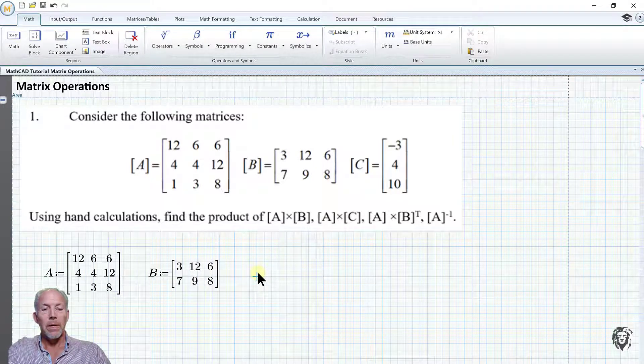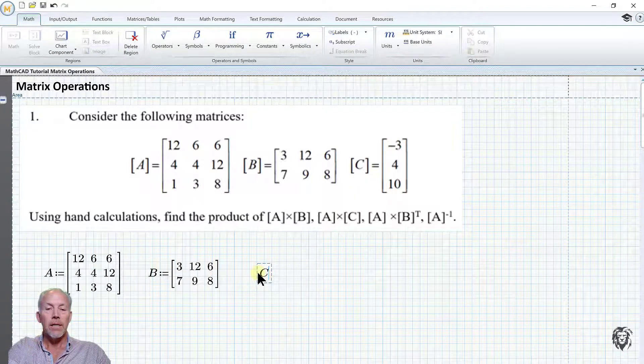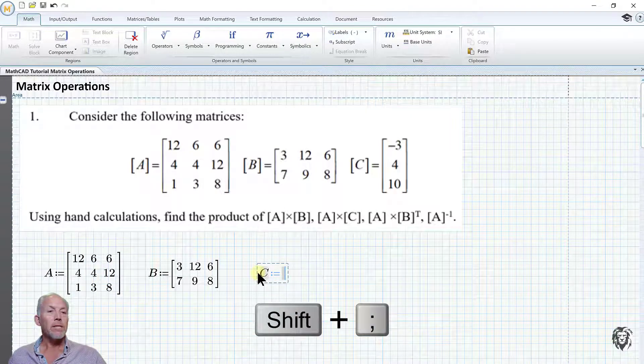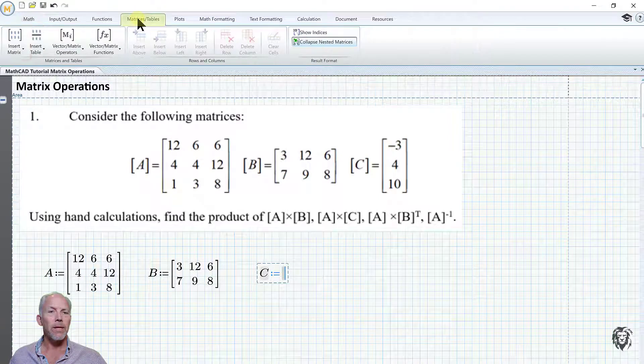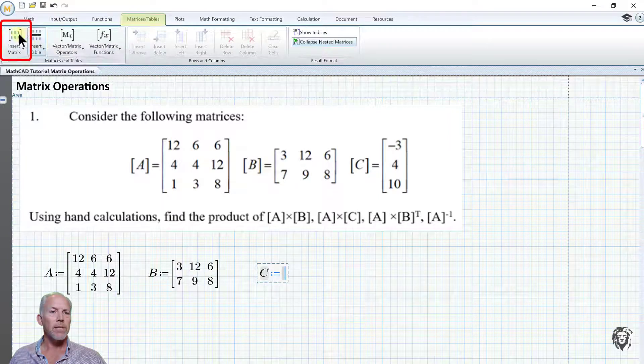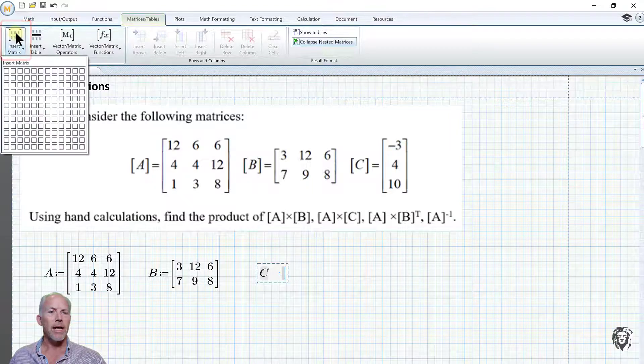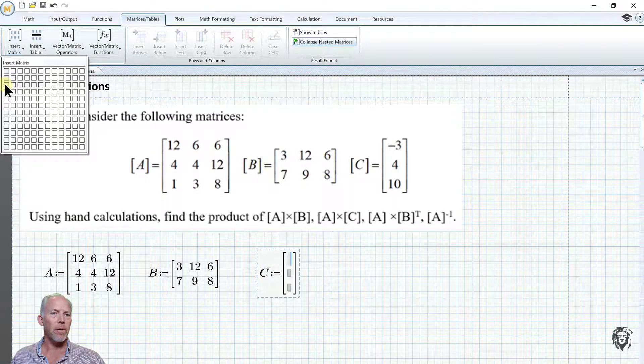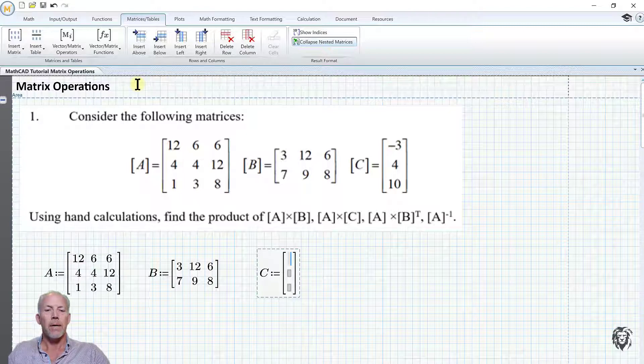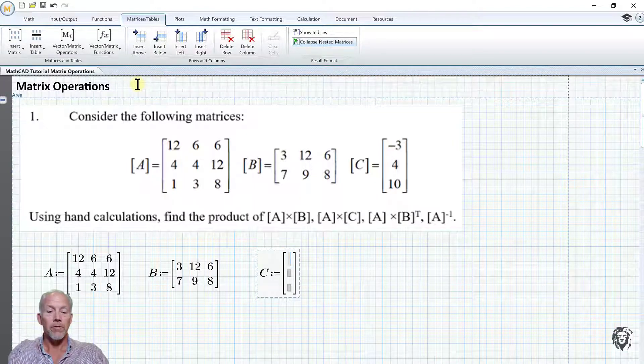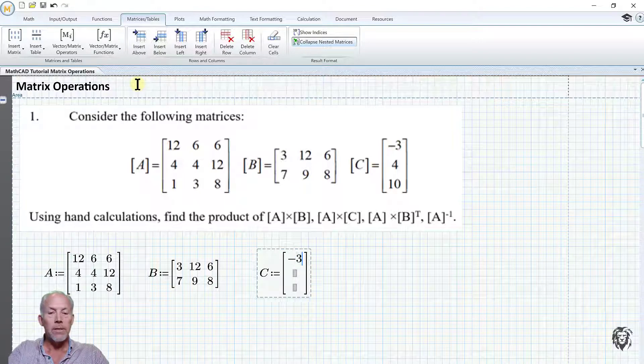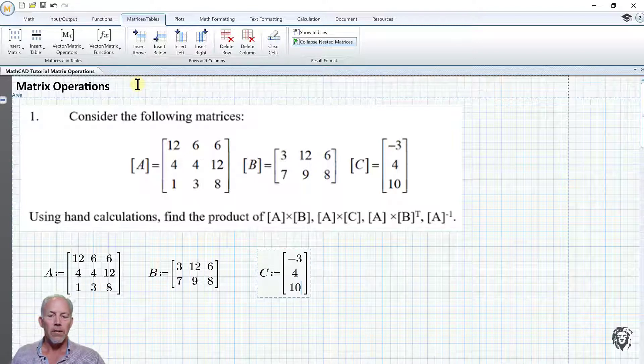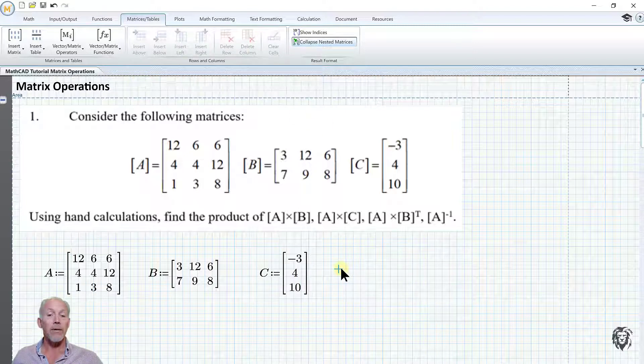I'm going to put my cursor here and start typing, call this one C. I'll use the colon to get to its definition. Because it's an array, we go to the matrices and tables tab. On the left we see insert matrix, define the size as three by one, and then I type in the values using the tab key to go between them. Now I have all three of my matrices defined.